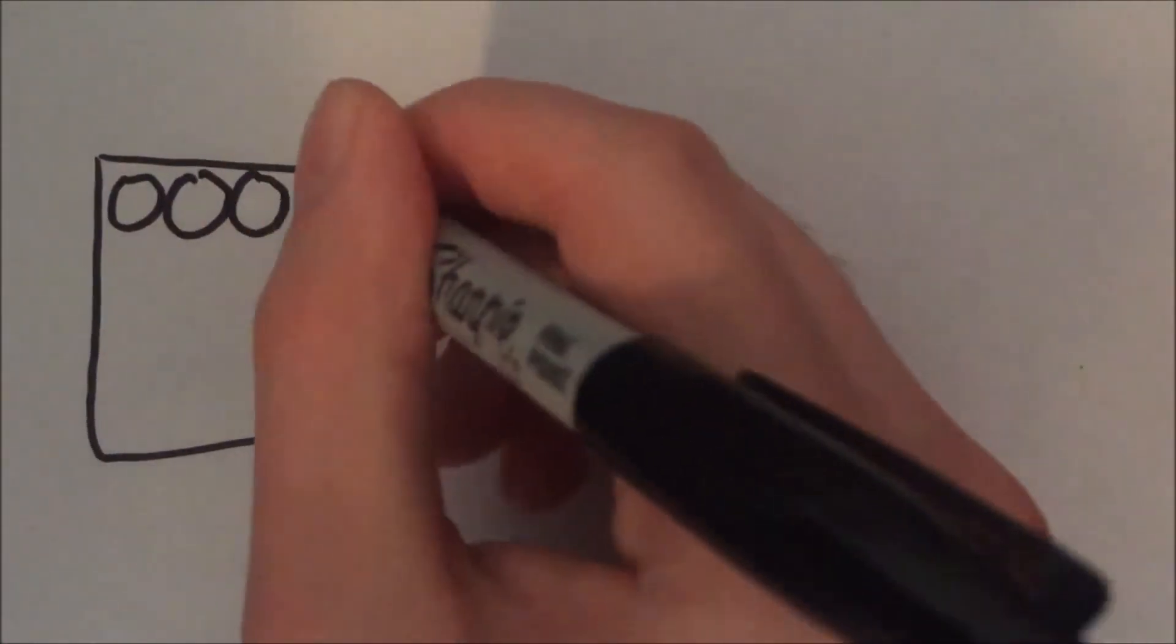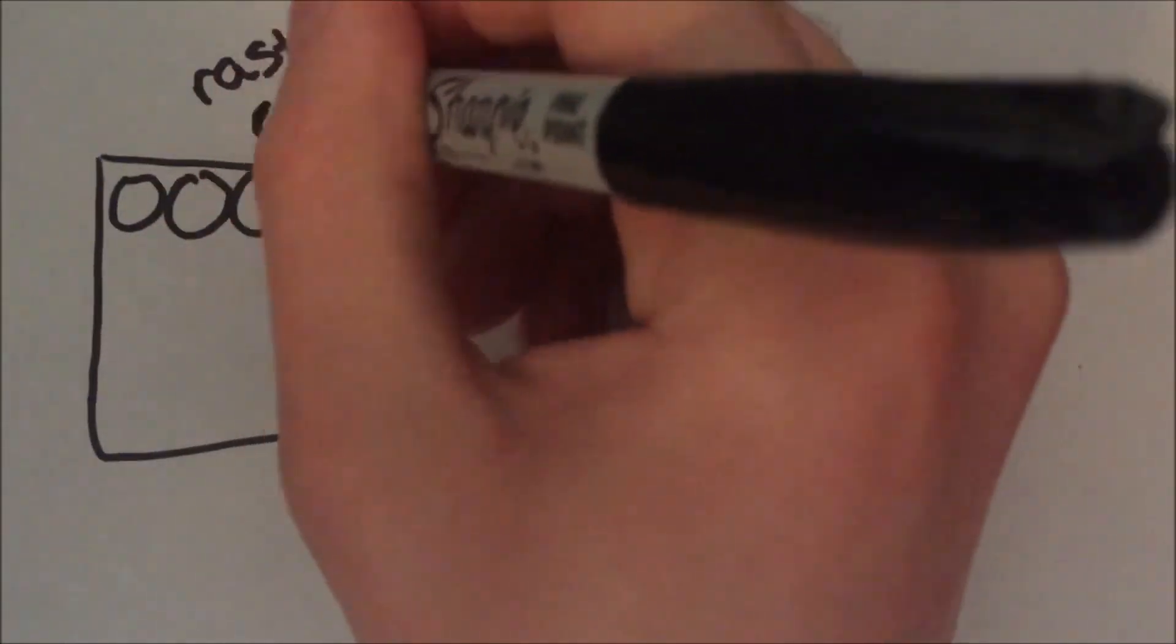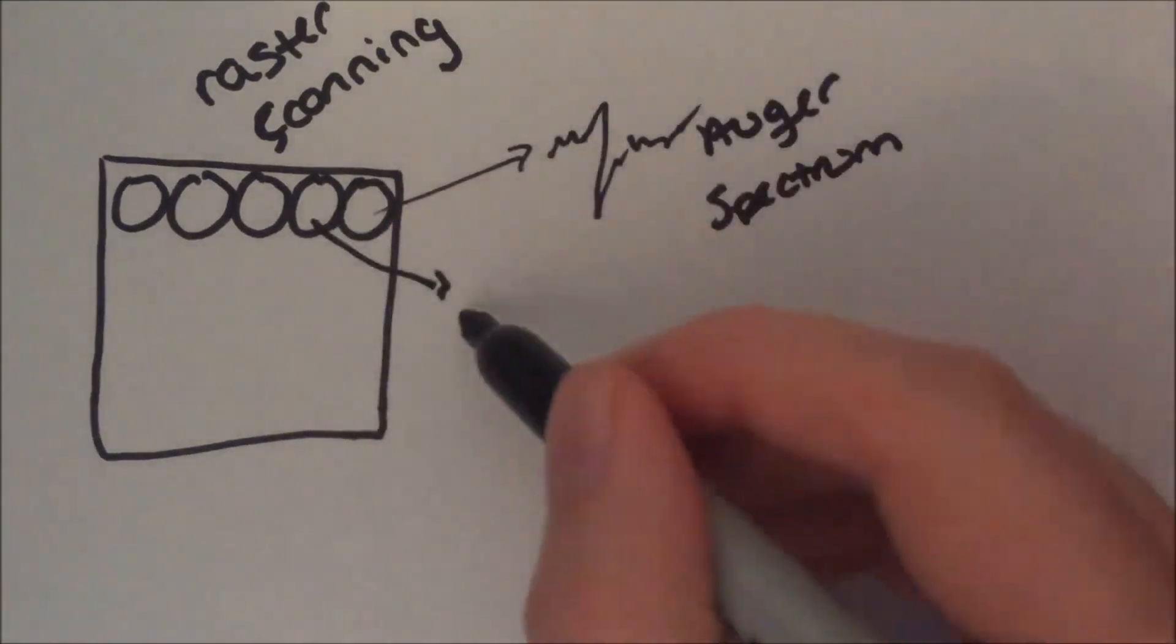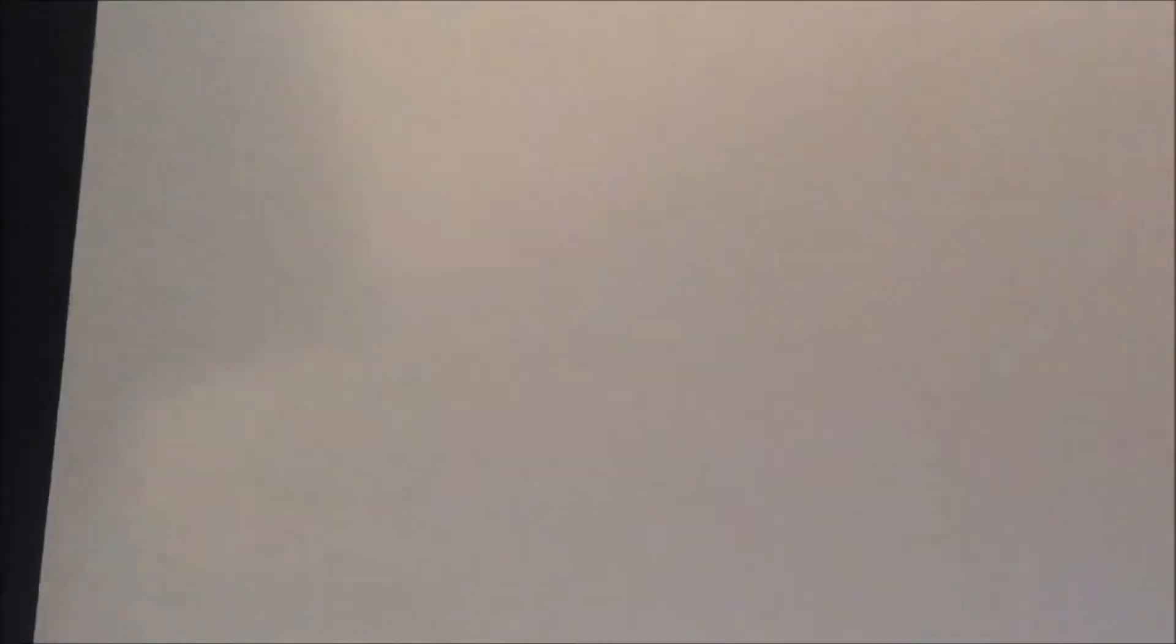This analysis can be performed at each location of the SEM raster scanning on the sample surface, yielding an Auger spectrum at each point. This is indicative of the elements present at that location on the sample surface.